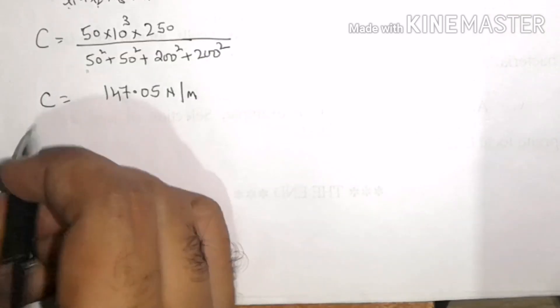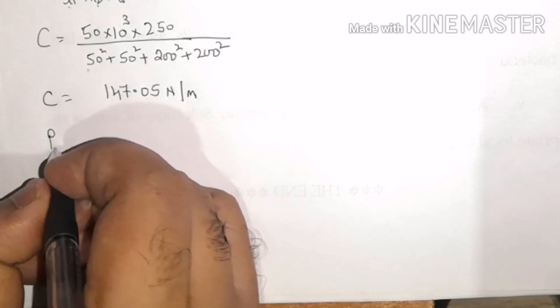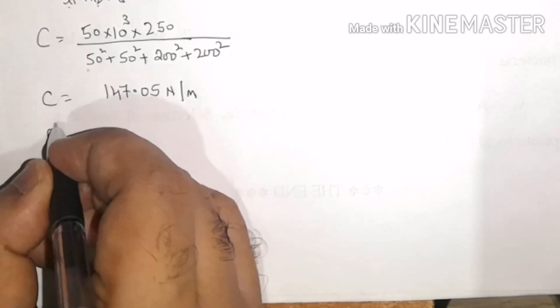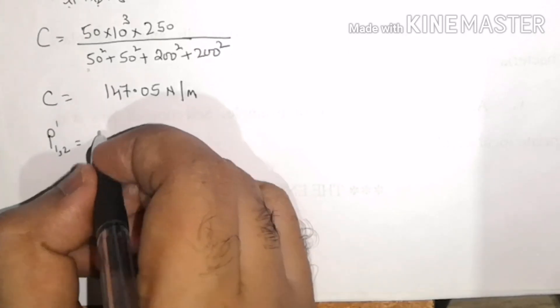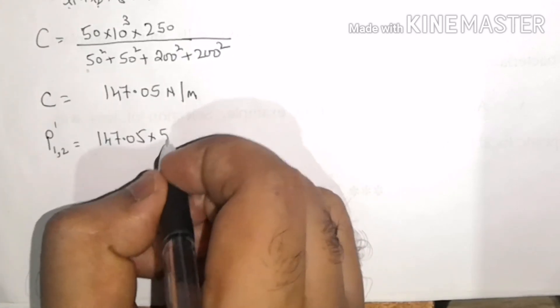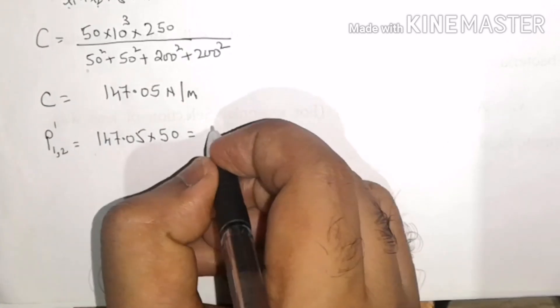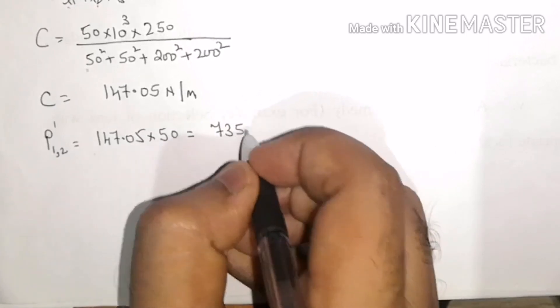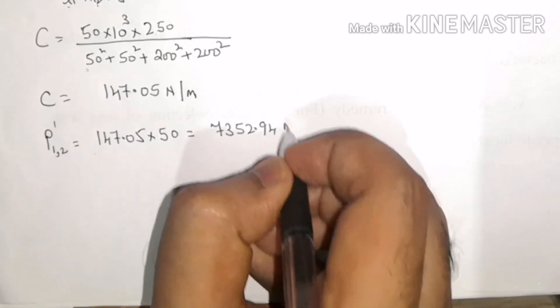Once we have the value of C, I can now find the value of P1 and P2 as C × L1 = 147.05 × 50 = 7352.94 N.